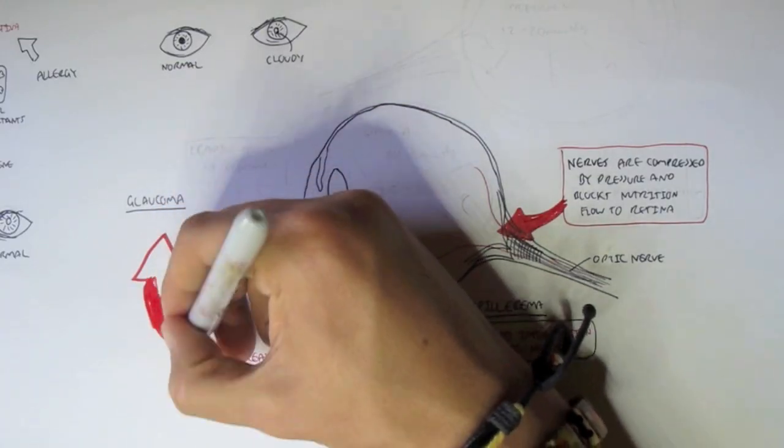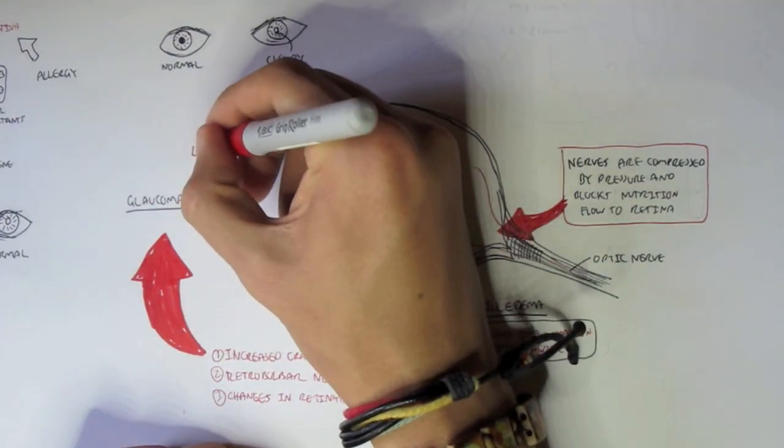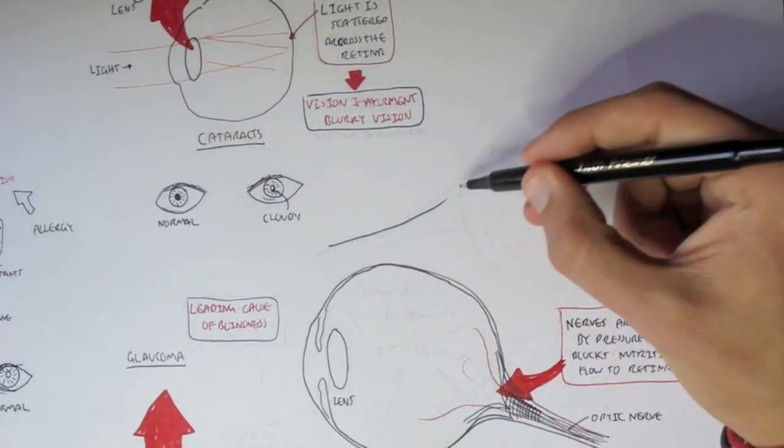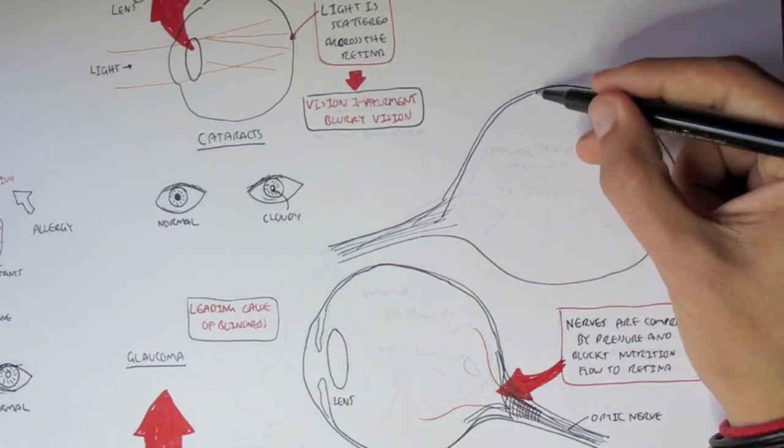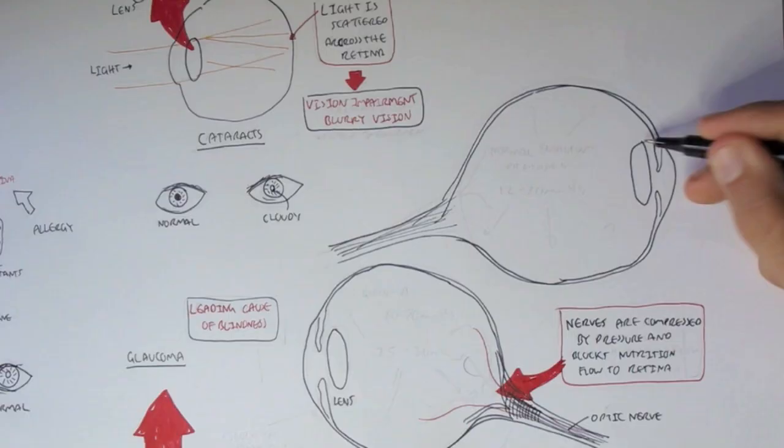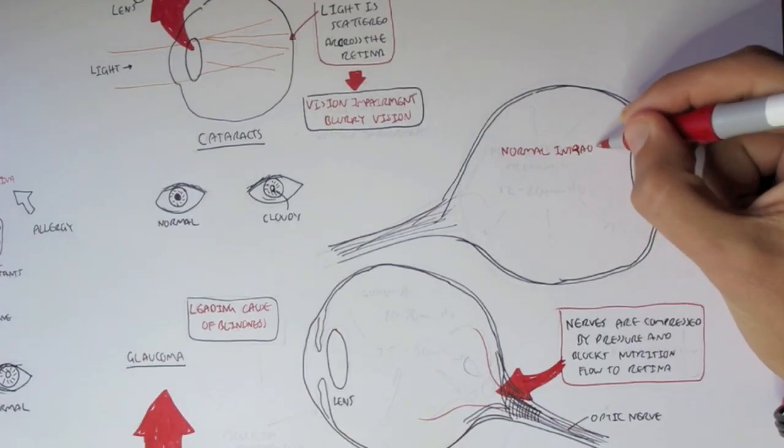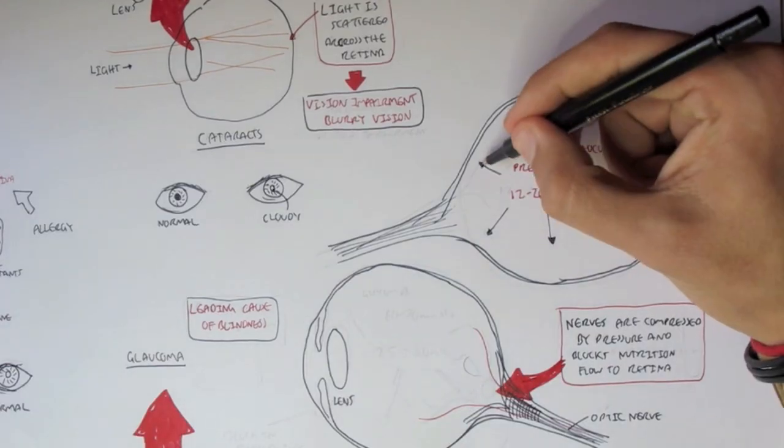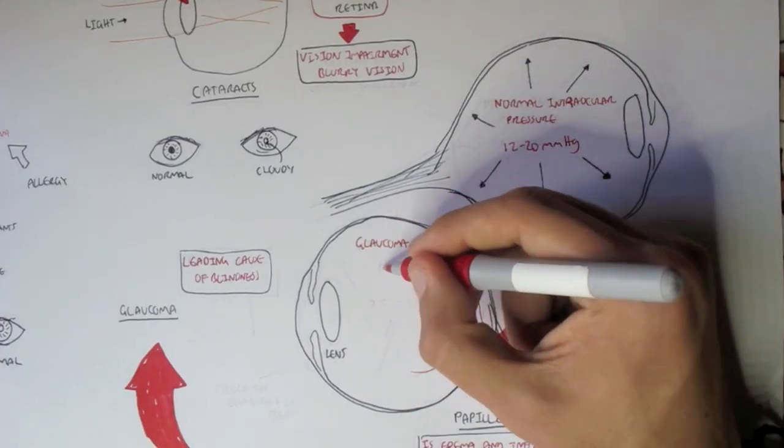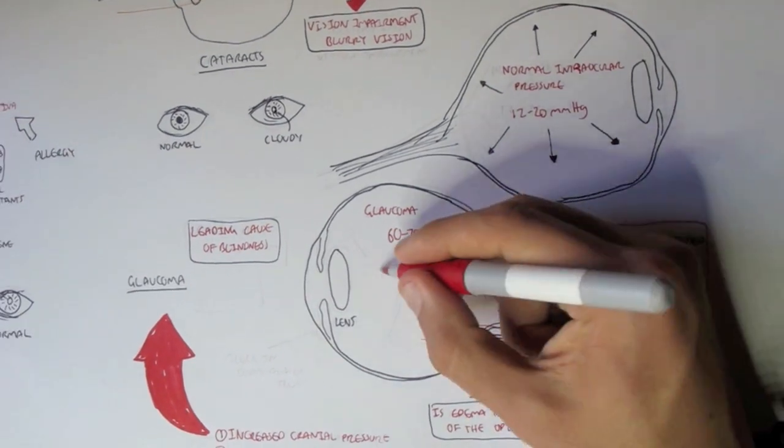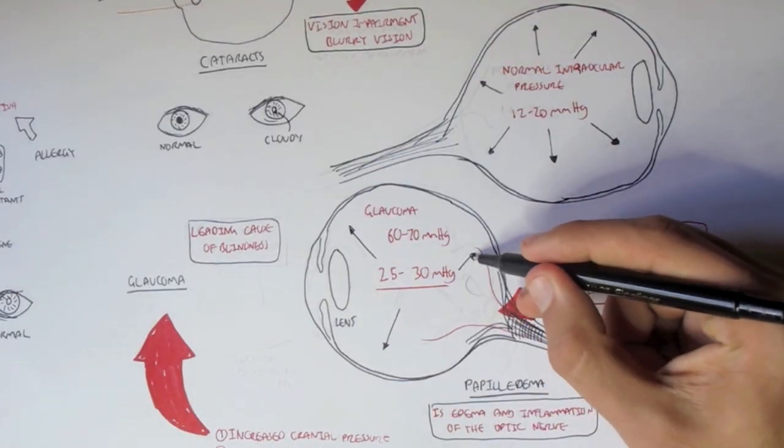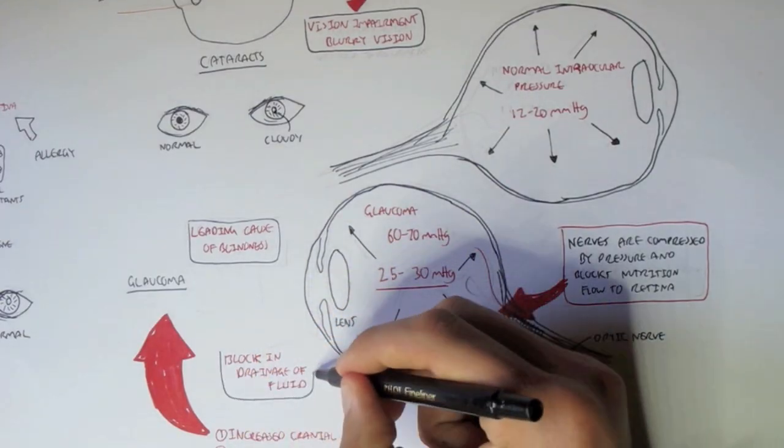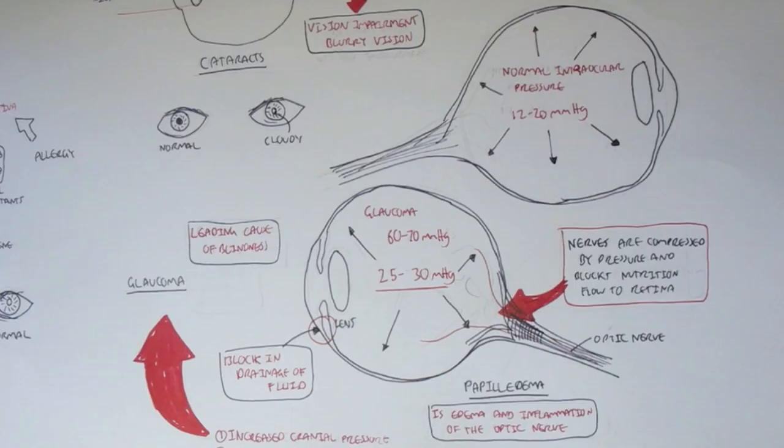Now, number one, the increased cranial pressure is actually the cause of glaucoma, which is our next eye disorder. And glaucoma is the leading cause of blindness, one of the main leading causes of blindness. And to know what glaucoma is, let's just look at a normal eye because it's to do with pressure. So, normal eye here with normal pressure, ciliary muscles again, optic nerve. So, in a normal eye, the normal intraocular pressure, the pressure in the vitreous humor is 12 to 20 millimeters mercury. So, this is normal. However, a person suffering from glaucoma can have pressure up to 60 to 70 millimeters mercury. Even 25 to 30 millimeters mercury can cause severe damage, which is typical of glaucoma. And it can cause the nerves to be compressed by pressure and block nutrition flow, like papilledema. And glaucoma is caused by the block in drainage of the fluid. And so fluid builds up, causing the increase in pressure.